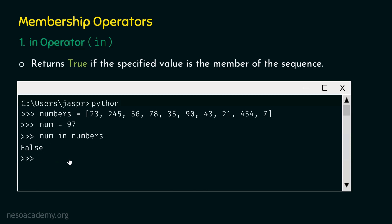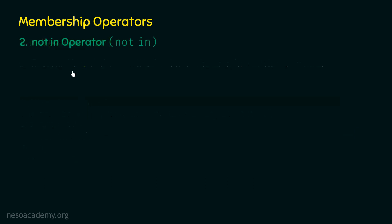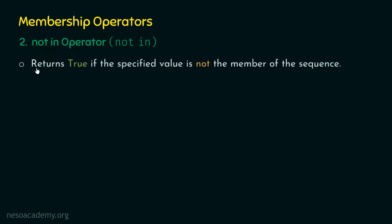Now let's move on to the next operator, which is the Not In Operator. The Not In Operator returns true if the specified value is not a member of the sequence. If it is a member of the sequence, then the Not In Operator will return false.